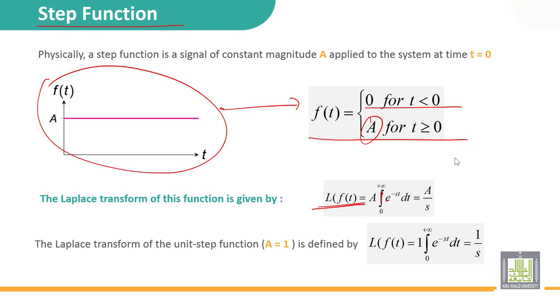Simply, it's A multiplied by the integral from 0 to plus infinity of e^(-st) dt, equal to A multiplied by (1/(-s)) e^(-st) between zero and plus infinity, equal to A over s.